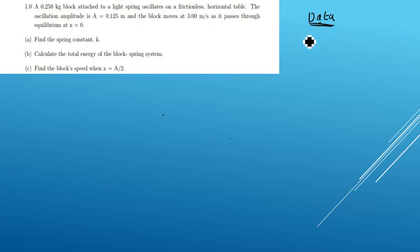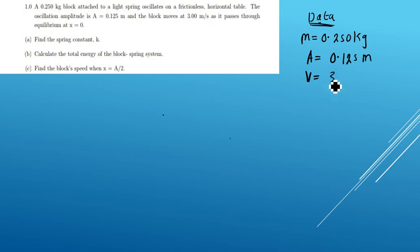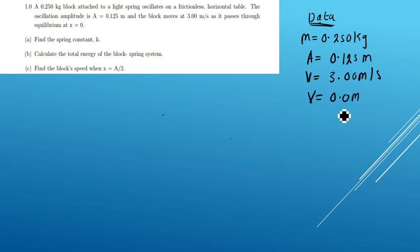Let's establish the given data. We have the mass of 0.250 kg, the oscillation amplitude is 0.125 meters, and the block moves at a velocity of 3.0 meters per second as it passes through the equilibrium point when x is equal to zero meters. Now we need to find the spring constant.